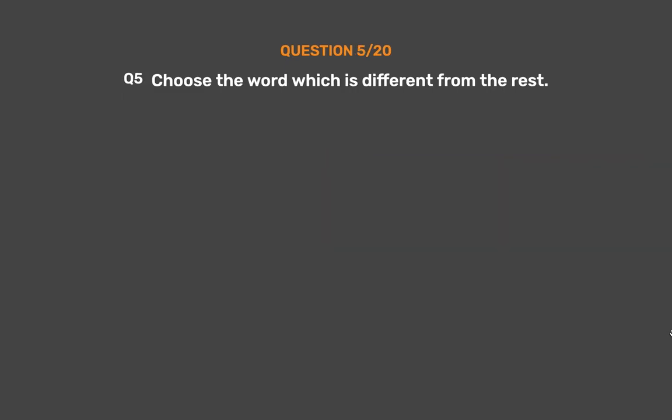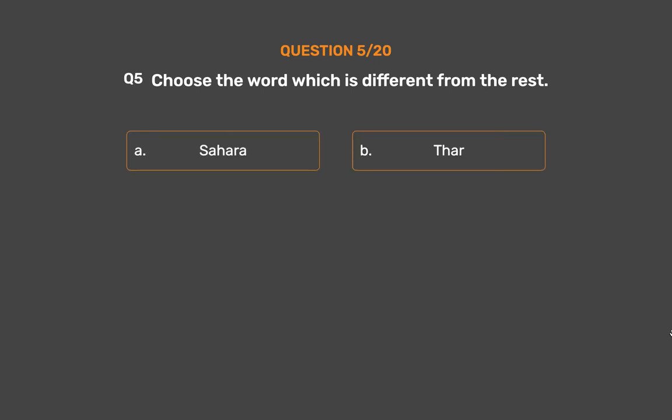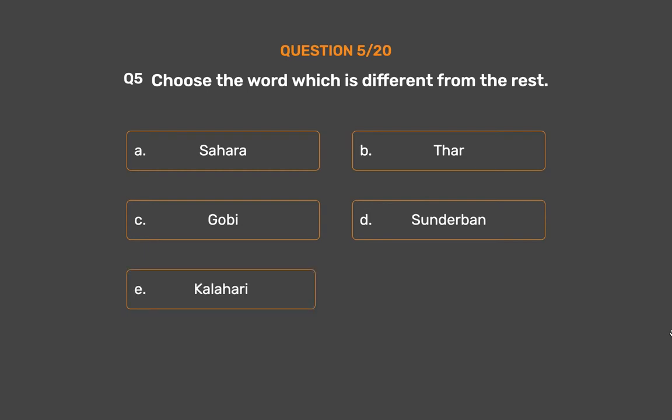Question number 5. Choose the word which is different from the rest. Option A: Sahara. Option B: Thar. Option C: Gobi. Option D: Sundarban. Option E: Kalahari.